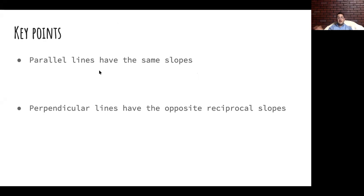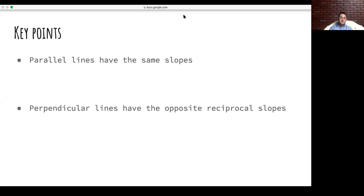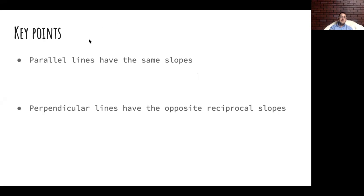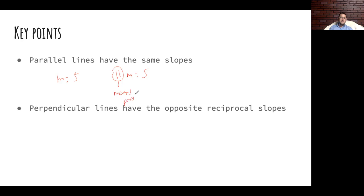Key points: parallel lines have the same slope. So, for instance, if my m is 5, my parallel slope is also equal to 5, and this symbol means parallel to.